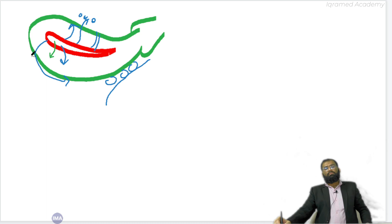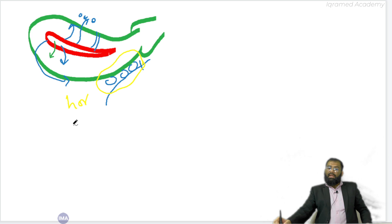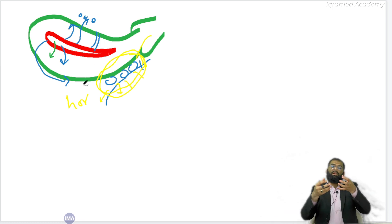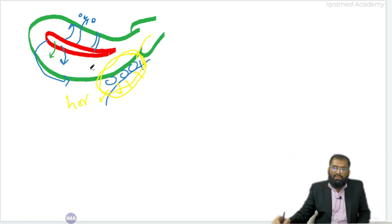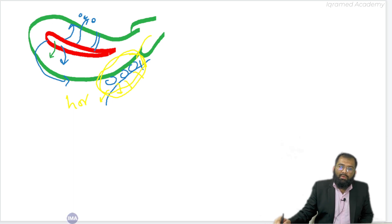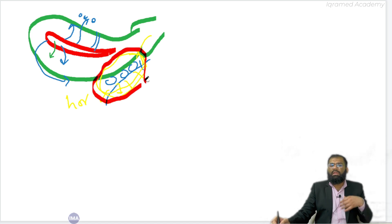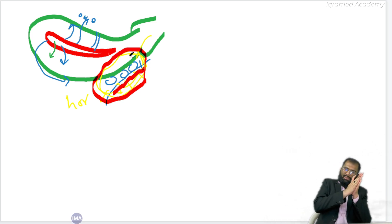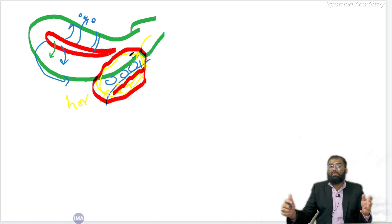Why is this important? Because this endometrial tissue, as we have discussed, is dynamic. It will be responding to the hormonal changes in the body, but at the same time it does not have any area to get expelled out. As a result, it keeps on accumulating within the organ where there is endometriosis. The blood would keep on accumulating, and this will cause excessive inflammation surrounding it. With each menstrual cycle there will be pain, dysmenorrhea, excessive inflammation, fibrosis, adhesions, and the patient might even present with obstruction.